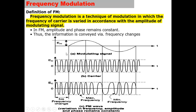Let us look at an example. Assume we have a signal to be modulated, which we call the modulating signal. It is a low frequency signal whose peak value is indicated by EM. EC is another signal which is a high frequency carrier signal whose magnitude is EC.